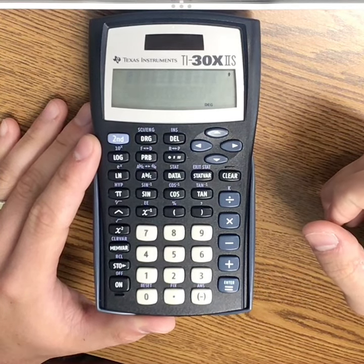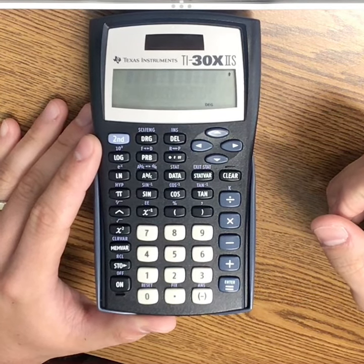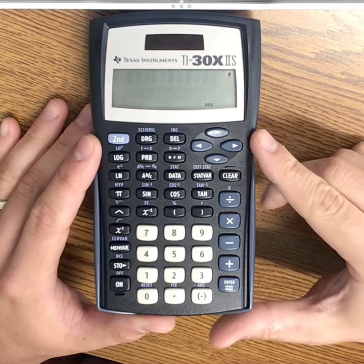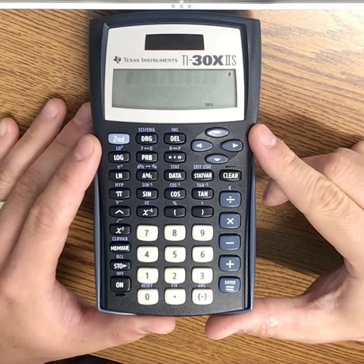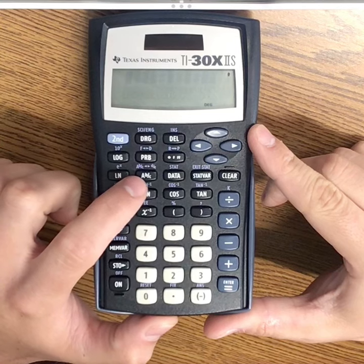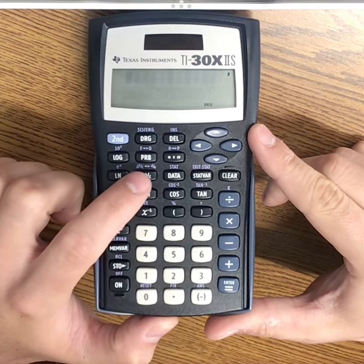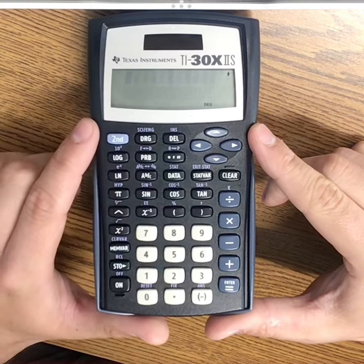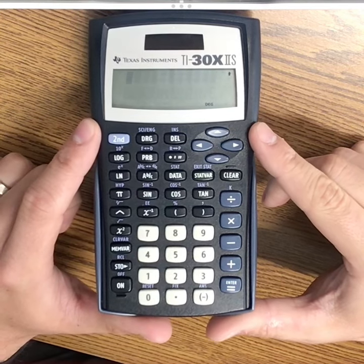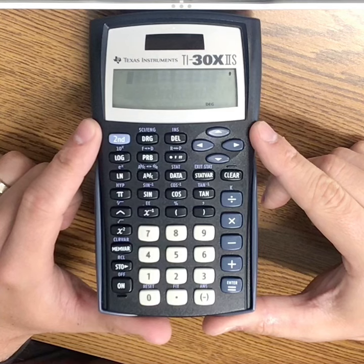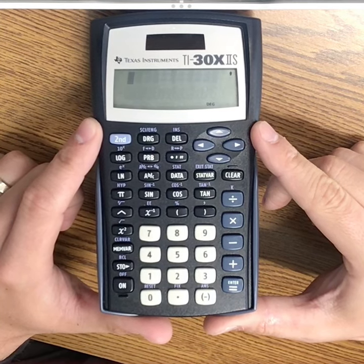In order to type a fraction on the TI-30x calculator, you have to use this button that has A B/C on it. So it says A and then the fraction B over C, right here. This button allows you to create fractions, improper fractions, and mixed numbers on the calculator.